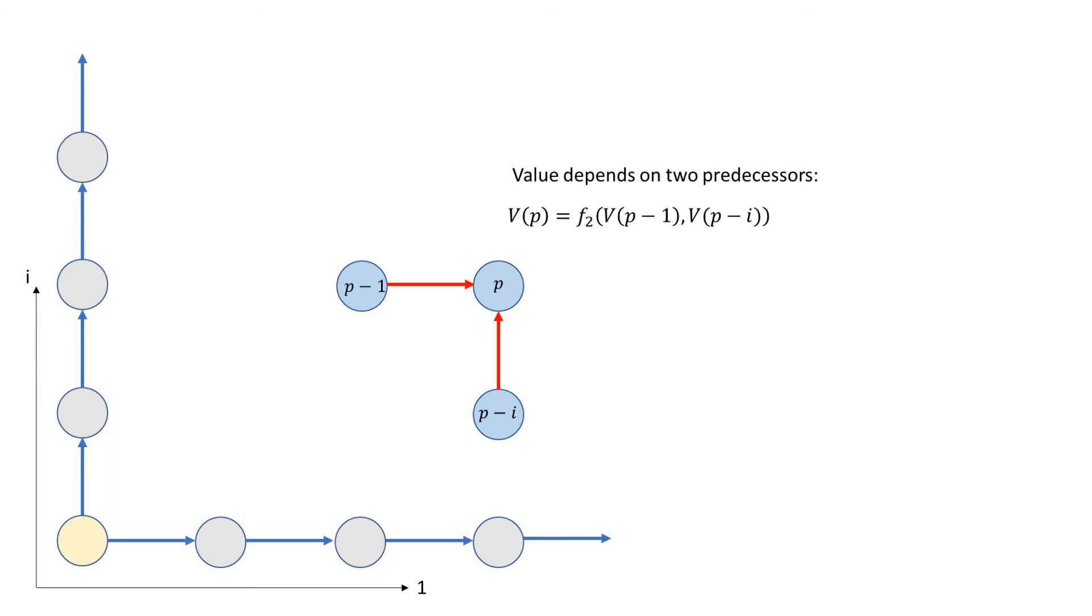So, the value of the cells in the middle is calculated by a function that takes two arguments, the values of the two immediate predecessors. The grey cells at the edges are defined by a function with a single argument. The cell at the origin is the initial condition.